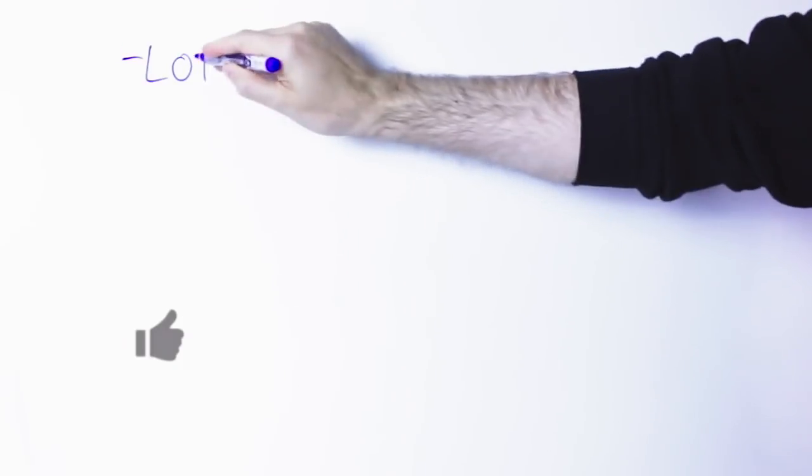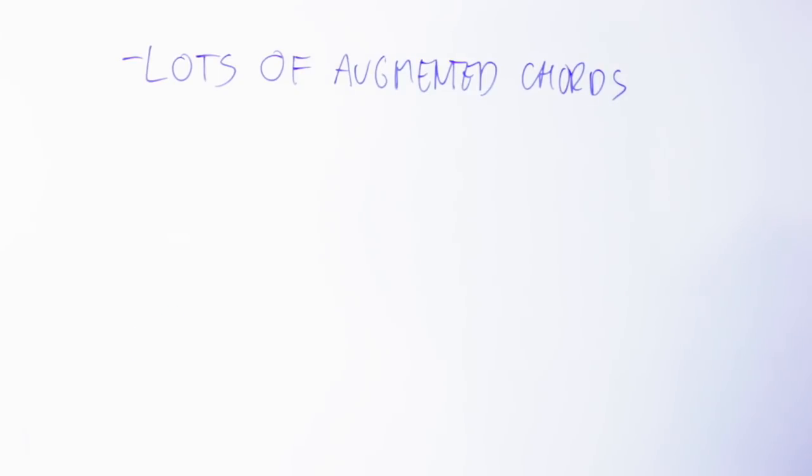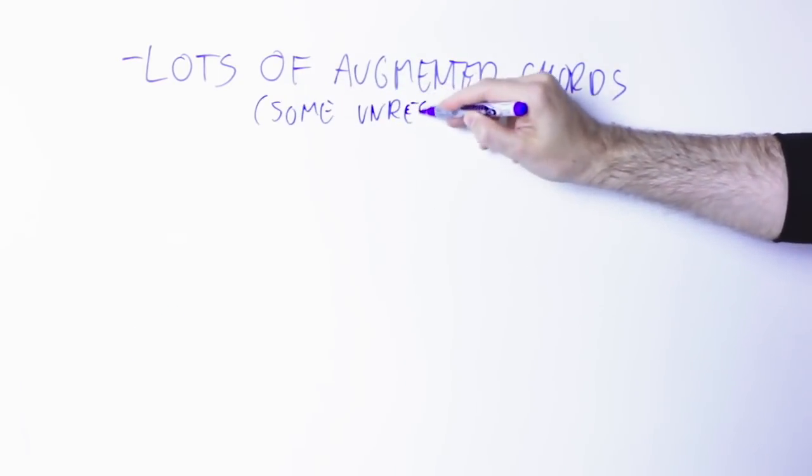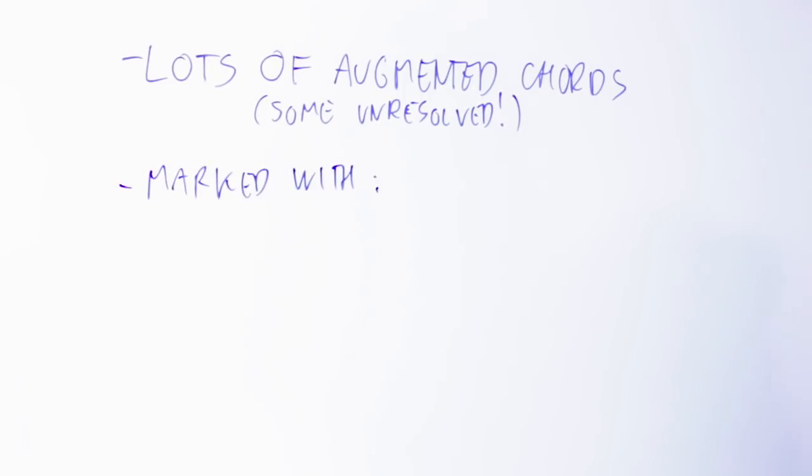Now, in this piece I put lots of augmented chords, some are even completely unresolved following the normal rules of harmony. The augmented chords were marked with a red sign on top of the bar, so if you go back you can identify them. Why am I having you listen to this?